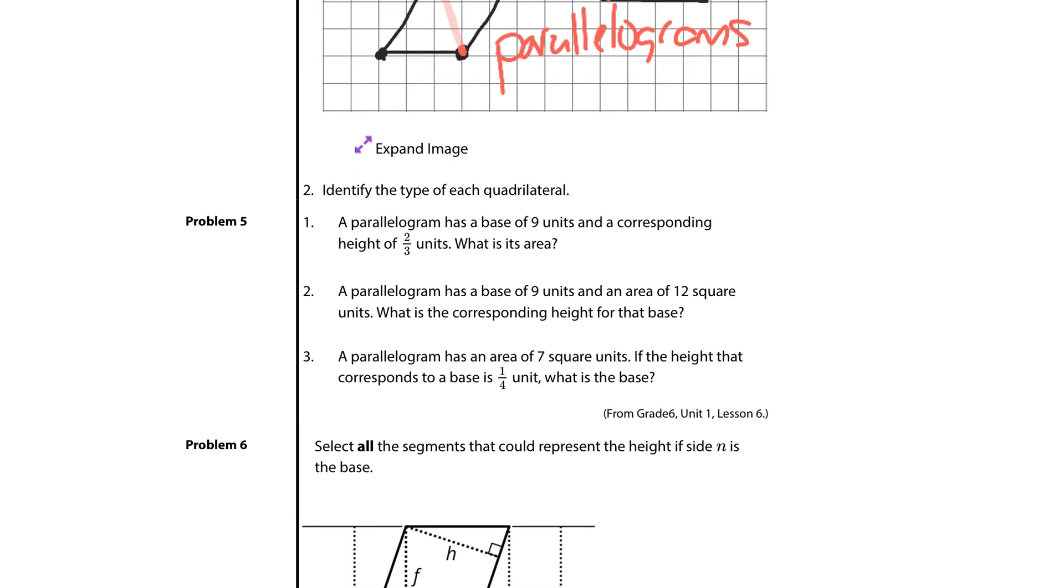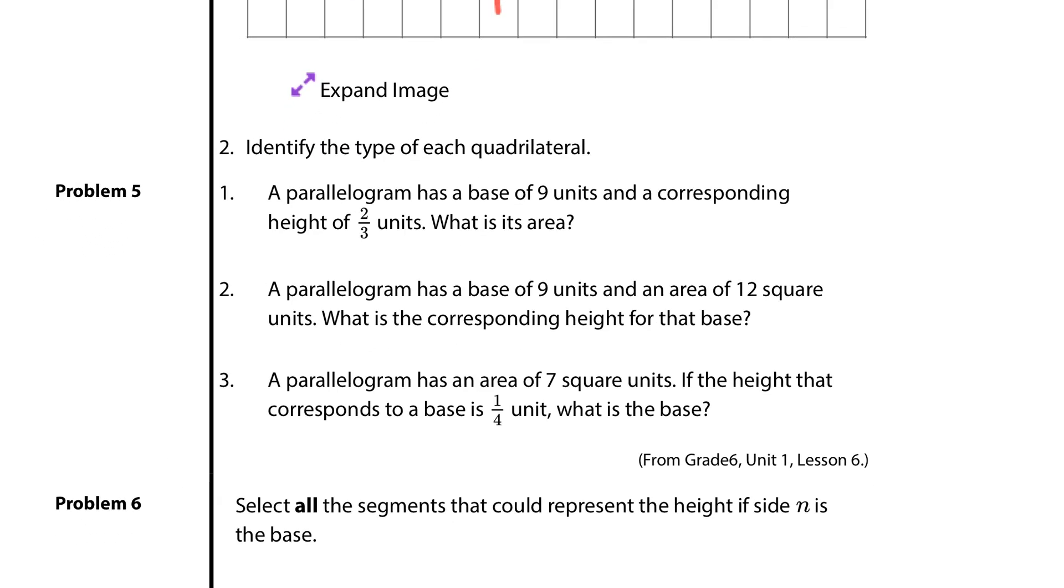Question five. A parallelogram has a base of nine units and a corresponding height of two-thirds units. What is its area? Area for parallelograms are equal to base times height. So our area will equal our base of nine times our height of two-thirds, which is eighteen-thirds, which simplifies into six square units.